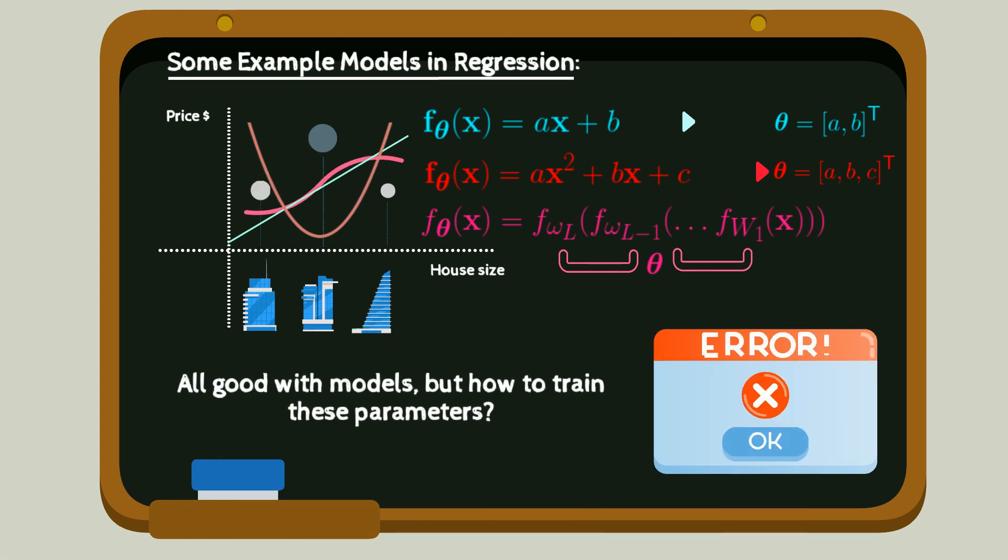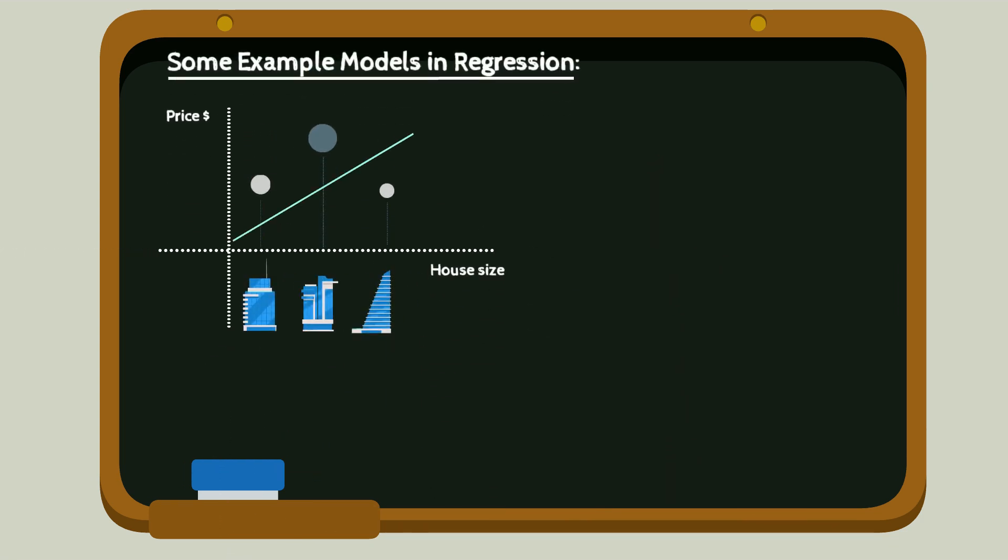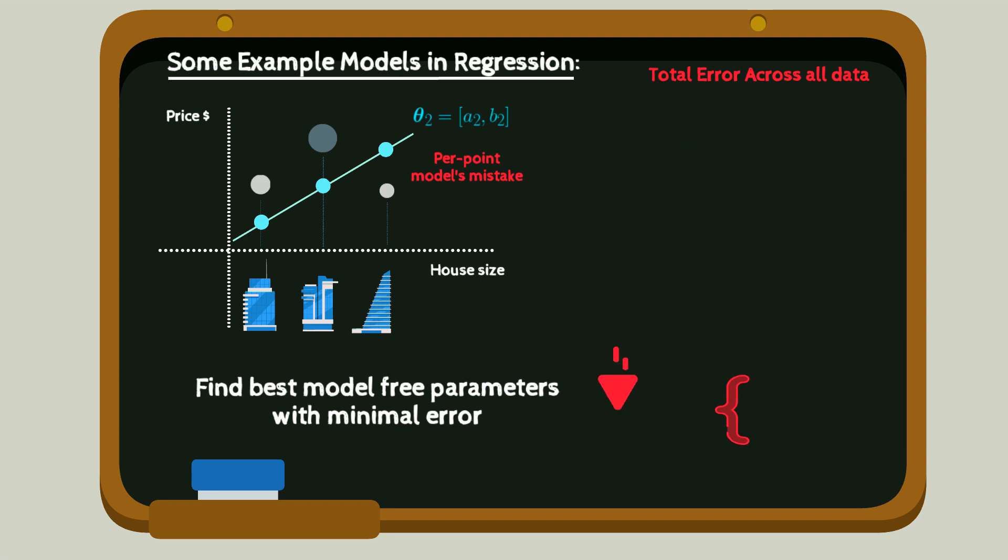For now, let's focus on the error function. Select a model, we need to determine correct values of the free parameters theta. Remember these a's and b's? Measuring prediction accuracy, we define a notion of error between the model's output using current thetas and the real ones from our training data set. Of course, our goal is to minimize such an error by correctly tuning theta.